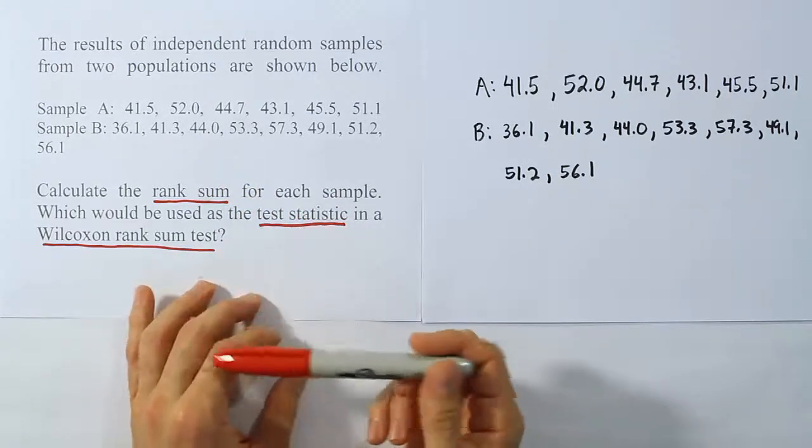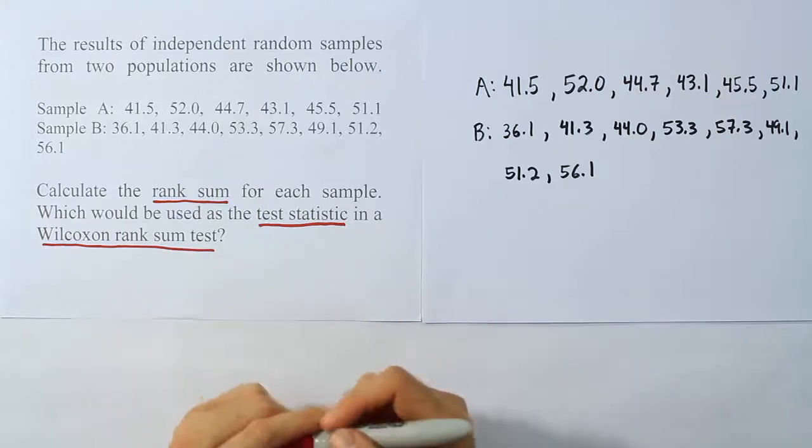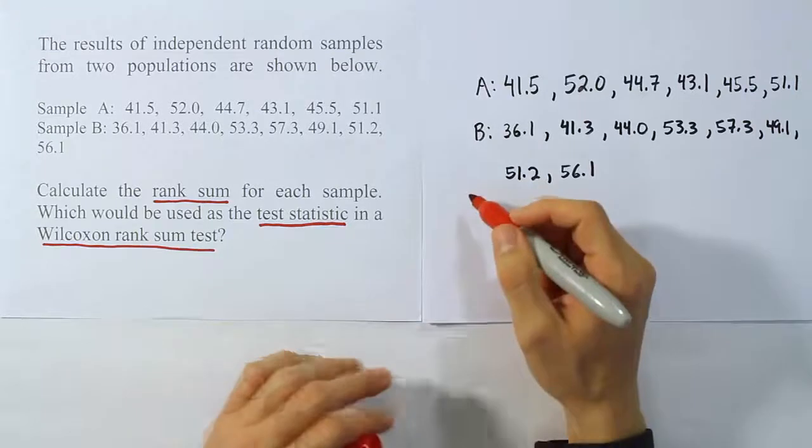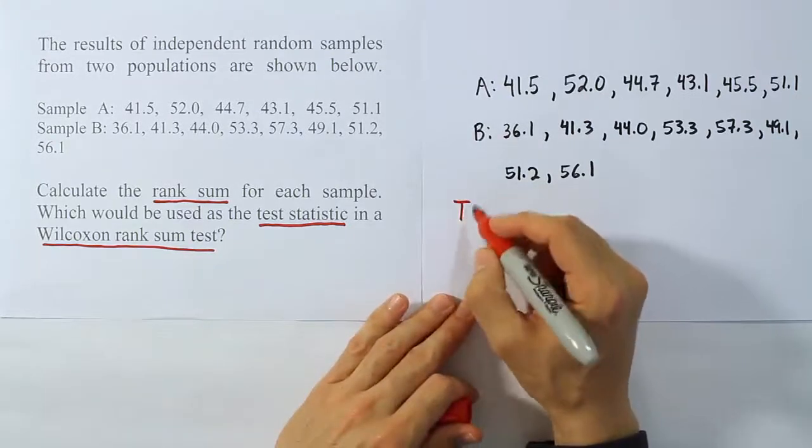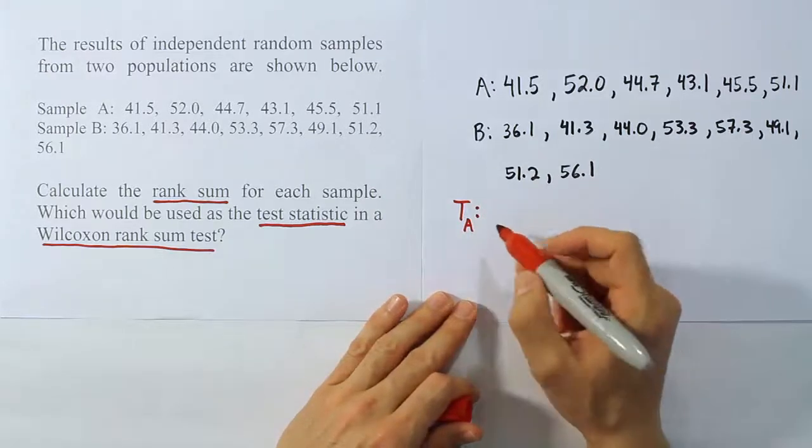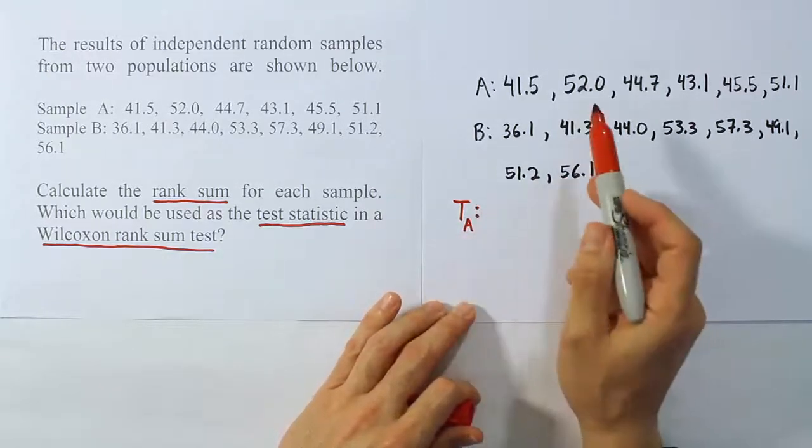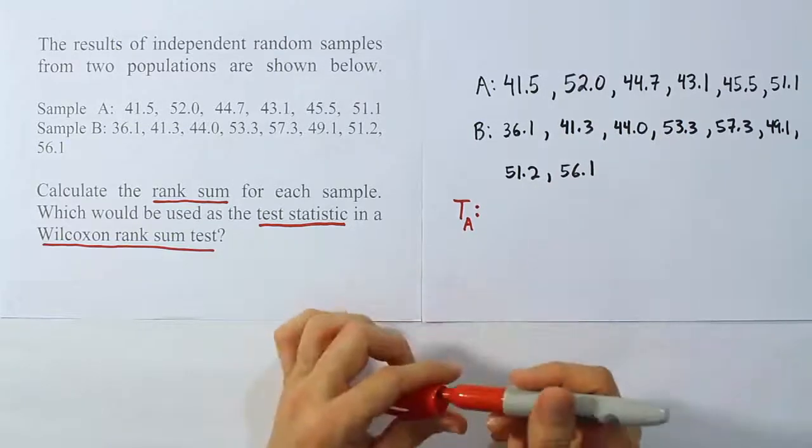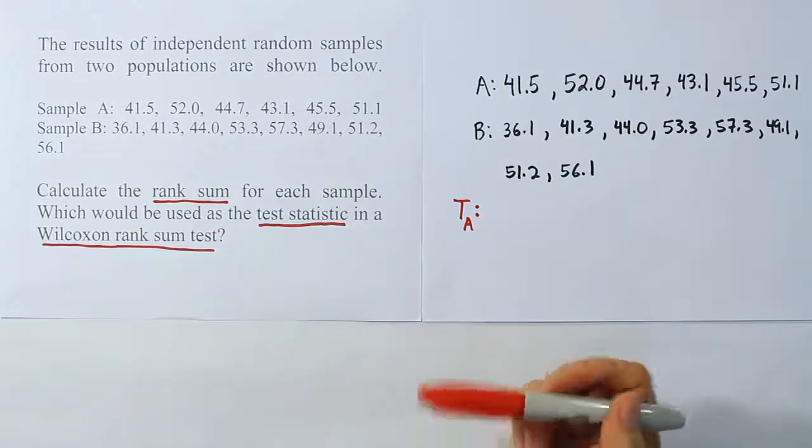Let's go ahead and try to calculate the test statistic. The first thing I would say is that the total for A, so we can call that TA, that means the rank sum total for population A. That's going to be our test statistic. And the reason why is because it has a smaller sample size. There are less values in A than there are in B. So that's how we decide which one will be our test statistic.